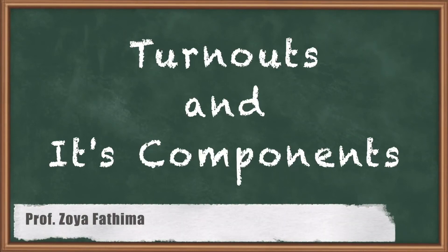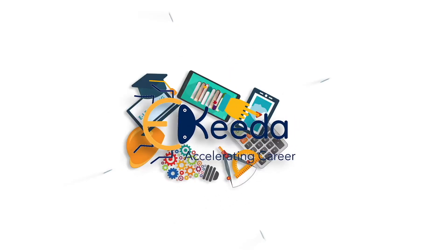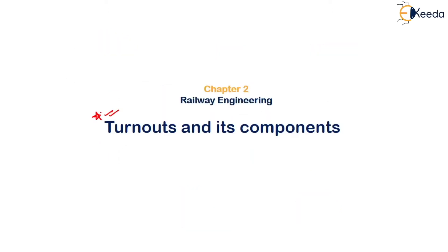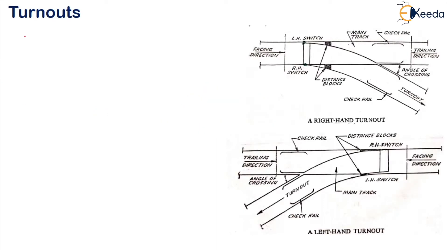Hello students. In this lesson, let us study about the turnouts and its components, and how exactly we lay our turnouts. To get started, turnouts are nothing but the complete setup of points and crossings. We know that points and crossings are provided for diverting the train from the main track to a branch track or a siding. This complete setup is known as your turnout.